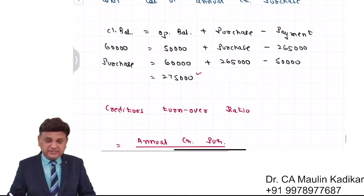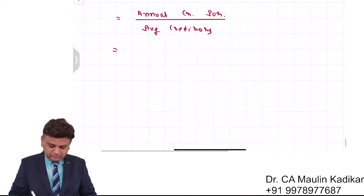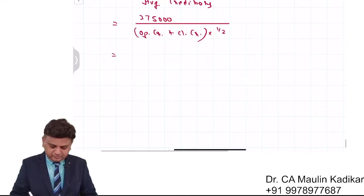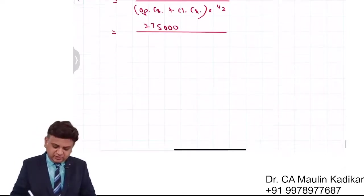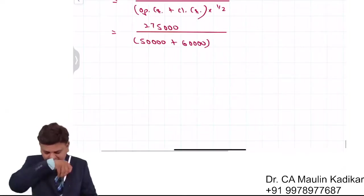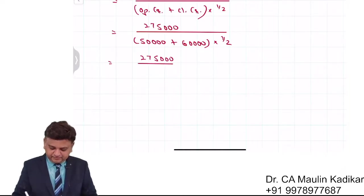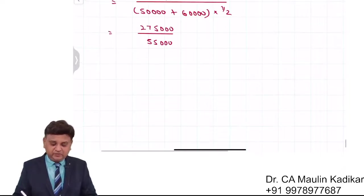Your credit purchase is 2 lakh 75,000 divided by average creditors - that is opening creditors plus closing creditors into 1 by 2. So 275,000 divided by opening creditors 50,000, closing 60,000, into 1 by 2. So 275 upon 55, that comes to 5 times.